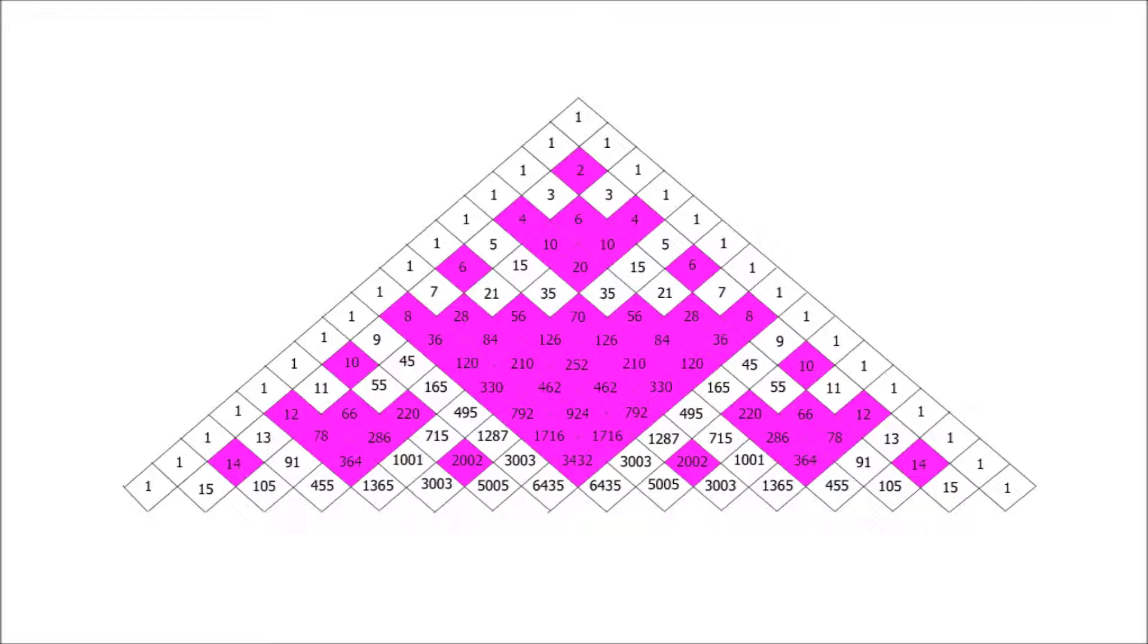You may like to think about this beforehand. What do you expect to happen? What sort of pattern would you expect when we shade in multiples of 3? Will it have the same sort of symmetry as this pattern or will it be more random?